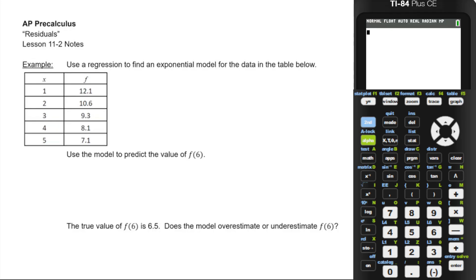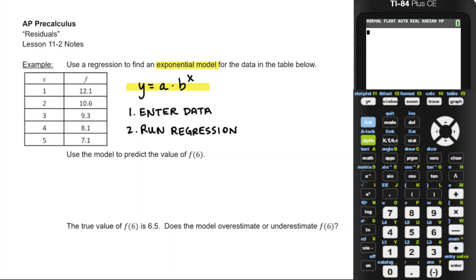We're going to start by finding an exponential model for the data in the table. You should be familiar — we did this quite a bit last time. When we see an exponential model, we're thinking something like a times b to the x. To get that model, we're going to use technology, enter the data into the lists, and then run a regression in two separate steps.